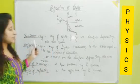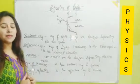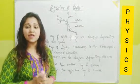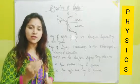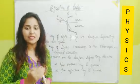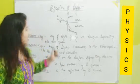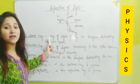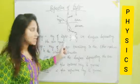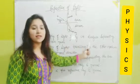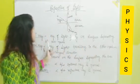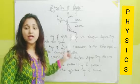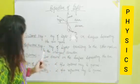Now the first term is Incident Ray. What is Incident Ray? It is a ray of light which comes to a particular surface. The ray of light falling on the surface separating the two media is known as Incident Ray.